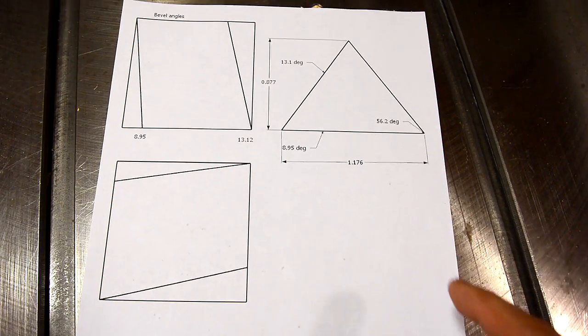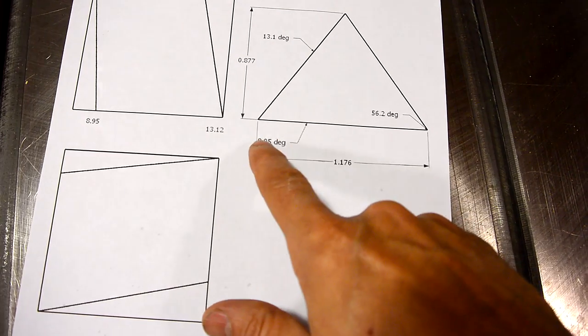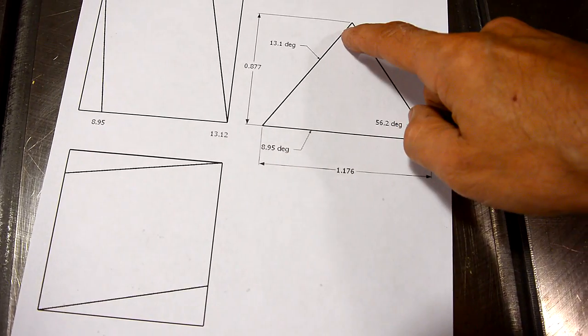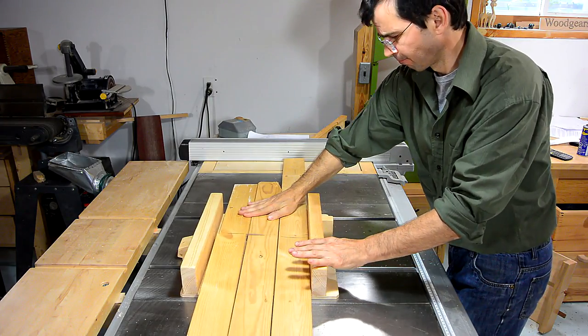This time around I worked it out in CAD, and I'm gonna need to make 60 of these triangles with the edges beveled 8.95 and 13.1 degrees. I'm gonna cut these from boards from an old futon frame, and these aren't entirely straight, so I have to cut them to shorter pieces before I start making triangles.